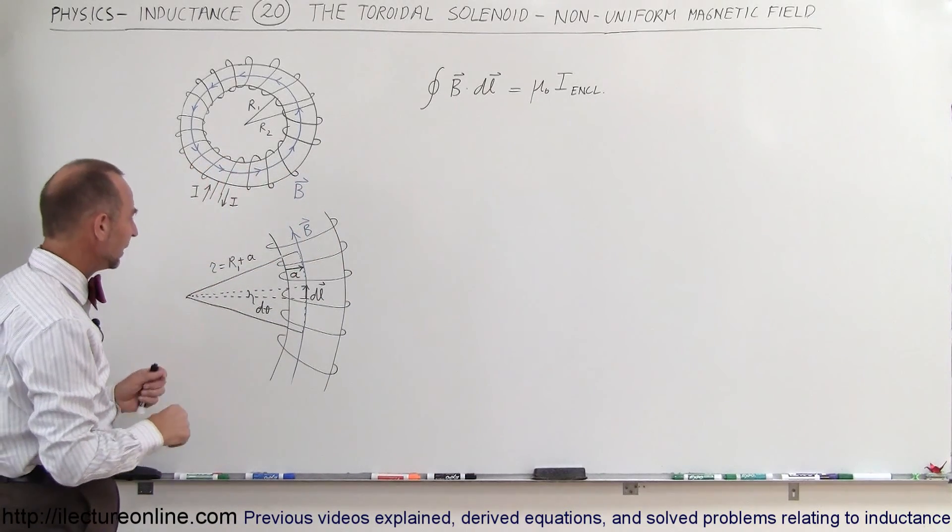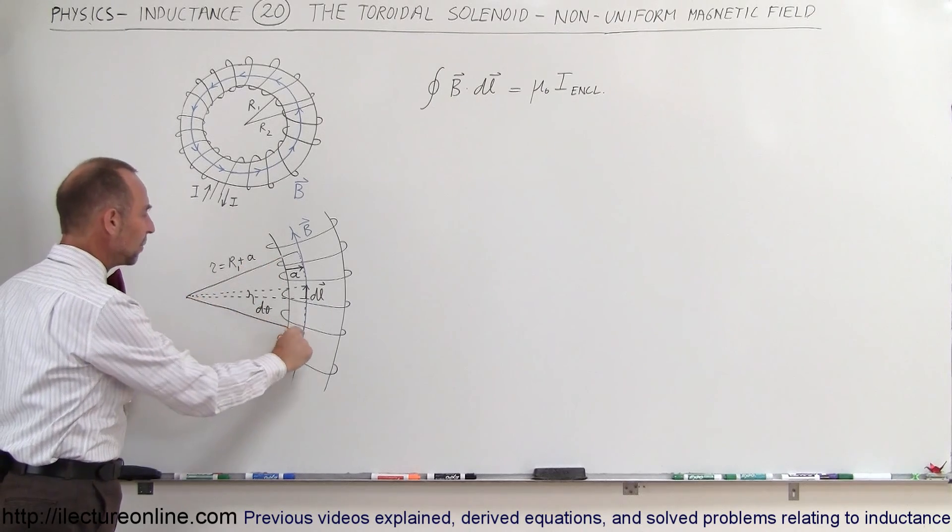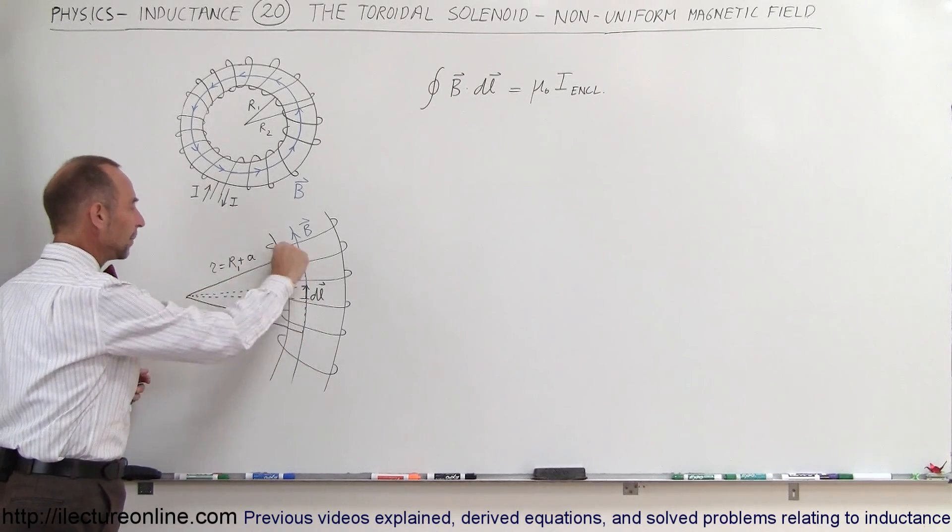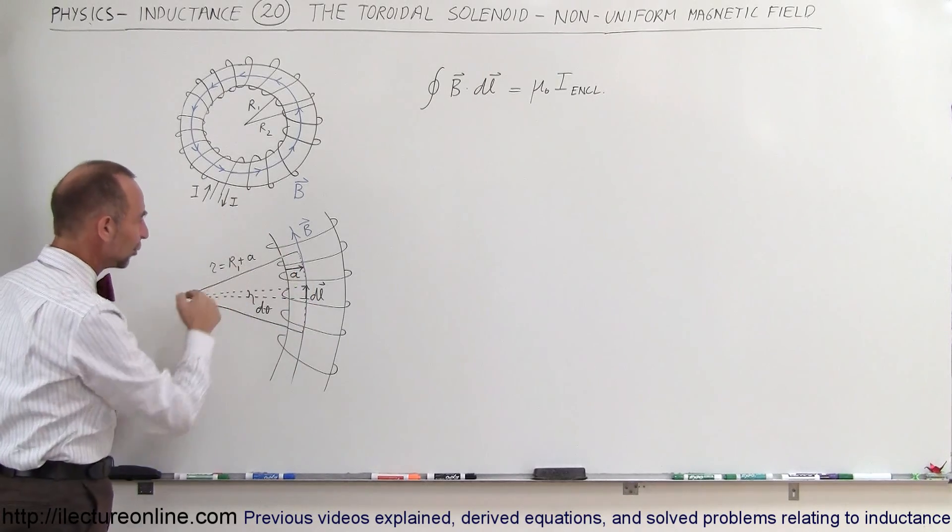Now what we have here is we have a small section of it and notice that this is going to be our closed loop integral around the whole loop even though it's a pi shape it's still a closed loop as we call it.